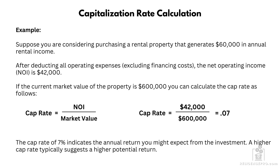We have a net operating income of $42,000. If the current market value of the property is $600,000, you can calculate the cap rate as follows: cap rate equals NOI divided by market value. In this case, it's $42,000 divided by $600,000, which equals 0.07, or 7%. A cap rate of 7% indicates the annual return an investor might expect, and a higher cap rate typically suggests a higher potential rate of return.